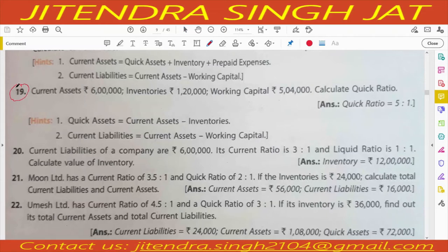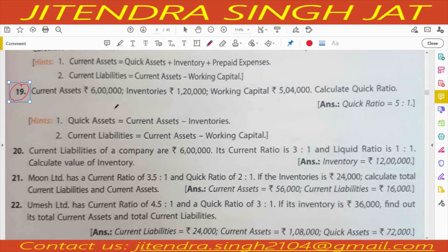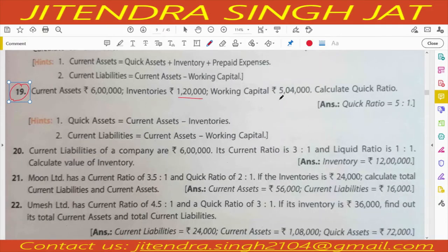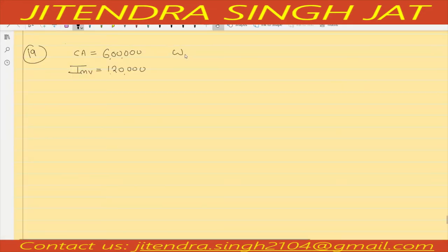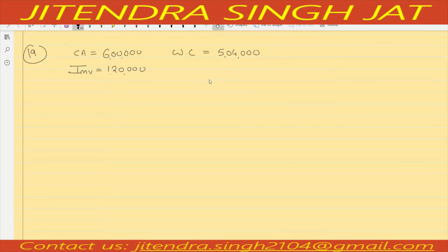Question number 19. Current assets are given as 6 lakh. Inventories are given as 1 lakh 20,000. Working capital is given as 5 lakh 4,000. Calculate quick ratio. We need to calculate quick ratio — the formula is quick assets or liquid assets upon current liability.